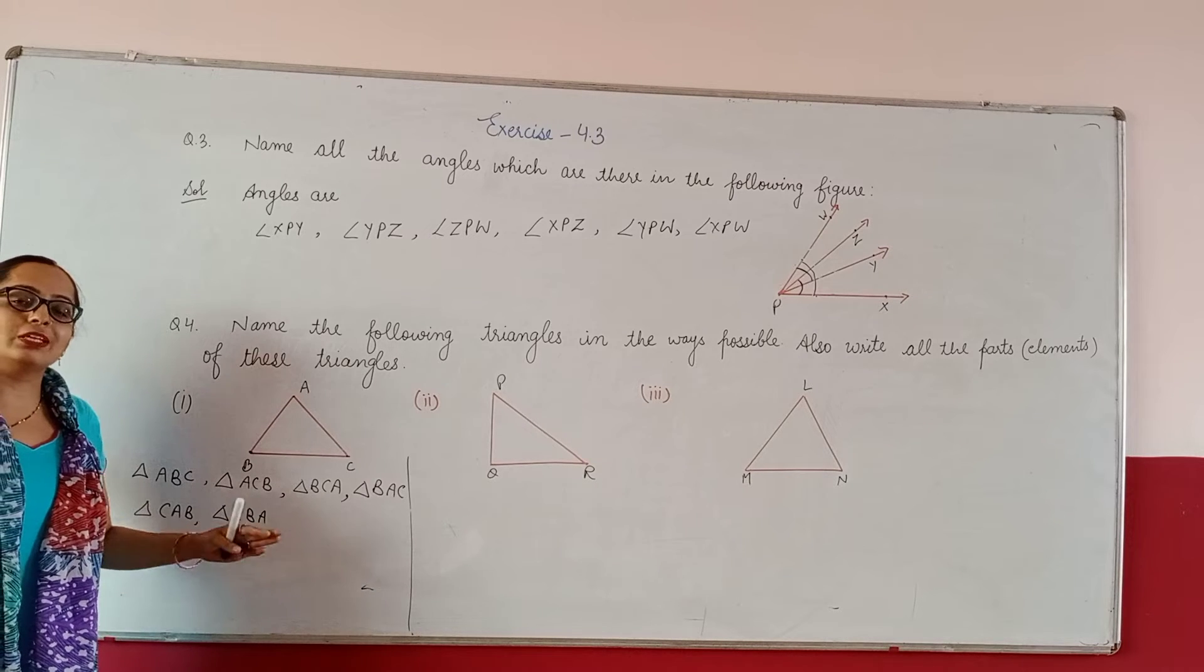Now elements - vertices which are A, B, C. Now sides which are AB, BC, CA. These are the parts of this triangle.